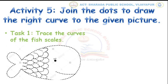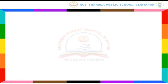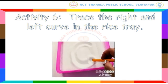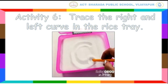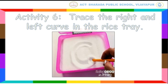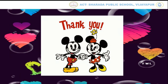Then color the fish. In the same way, you have to complete task 2. Children, let us do our sixth activity. In this activity, use a rice or sand tray to trace right and left curve. Dear parents, please provide a tray of rice or sand to your child to complete this activity. Children, trace the curves more than 5 times. Thank you.